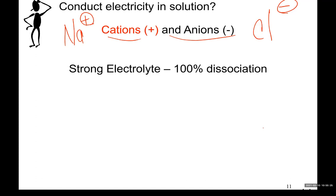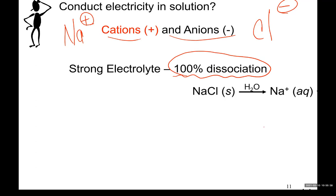What is a strong electrolyte? Any substance dissolved in water that produces 100% ions — 100% dissociated to ions — that would be a strong electrolyte. NaCl is the common example: it breaks down 100% in water to produce Na+ and Cl−.